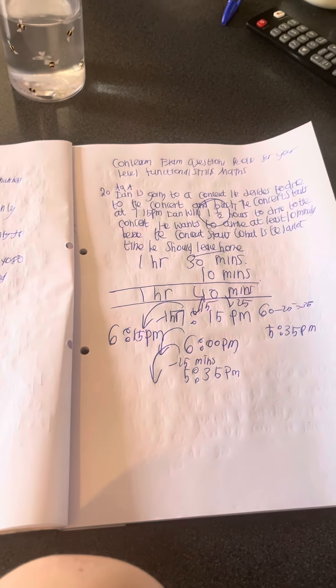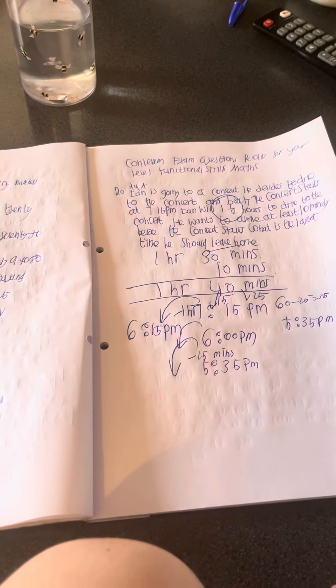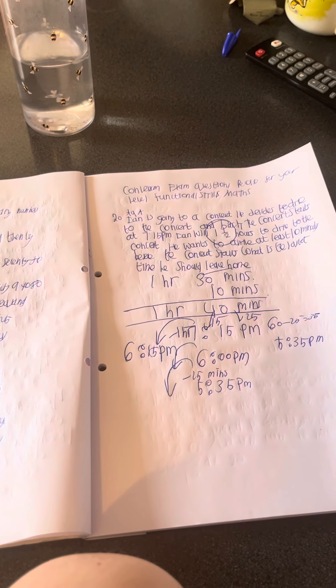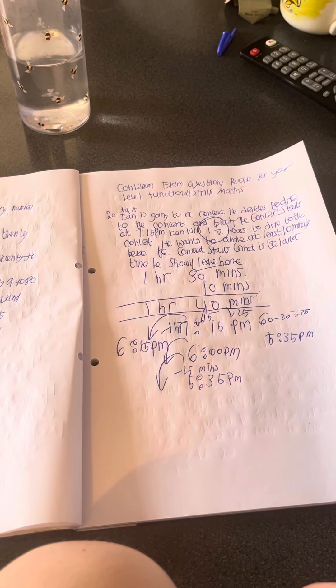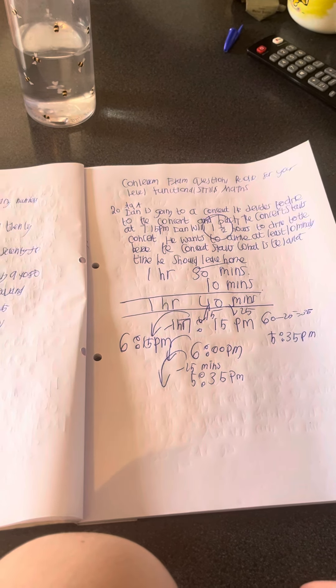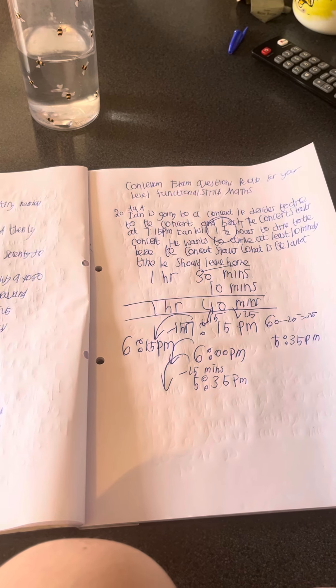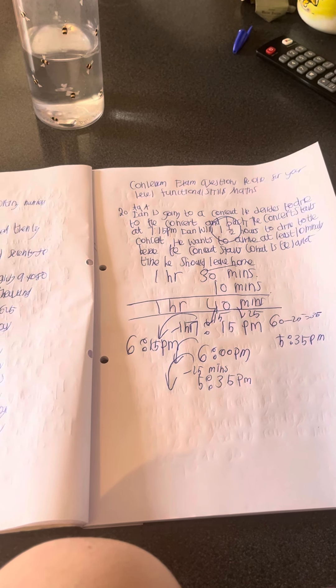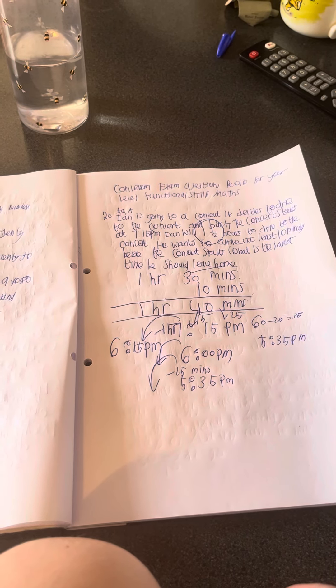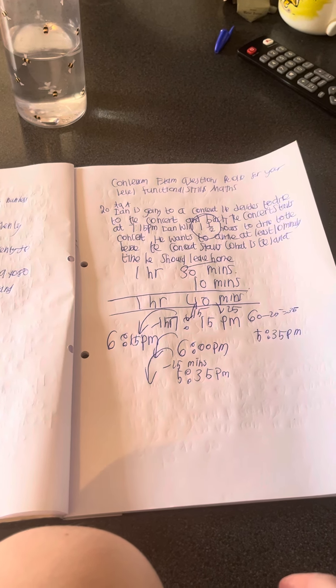Here's a question from a level one functional skills math exam. Anne is going to a concert. He decides to drive to the concert and back. The concert starts at 7:15pm. Anne will take one and a half hours to drive to the concert. He wants to arrive at least ten minutes before the concert starts. What is the latest time he should leave home?